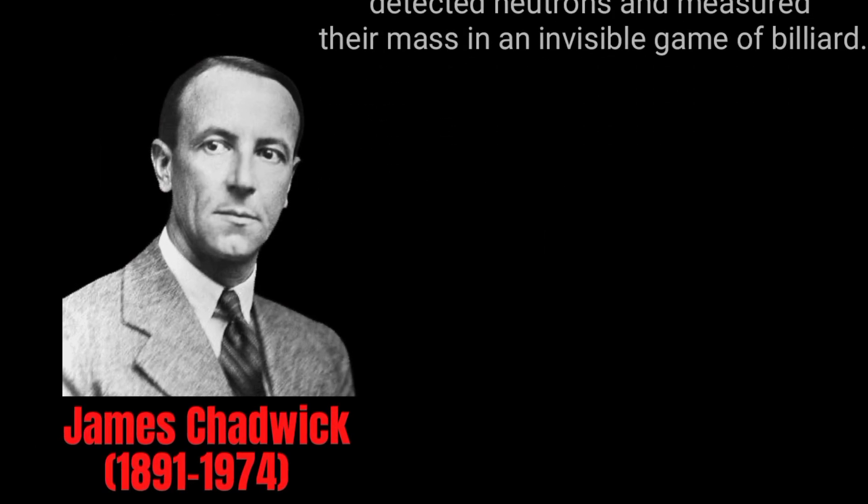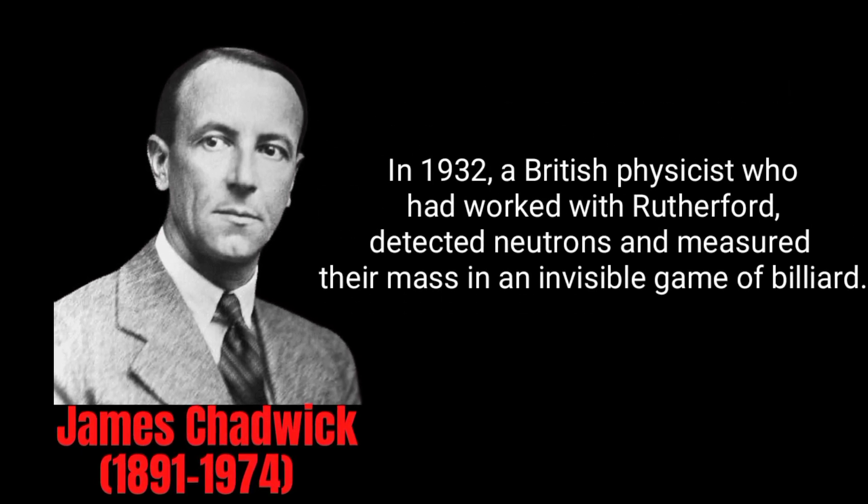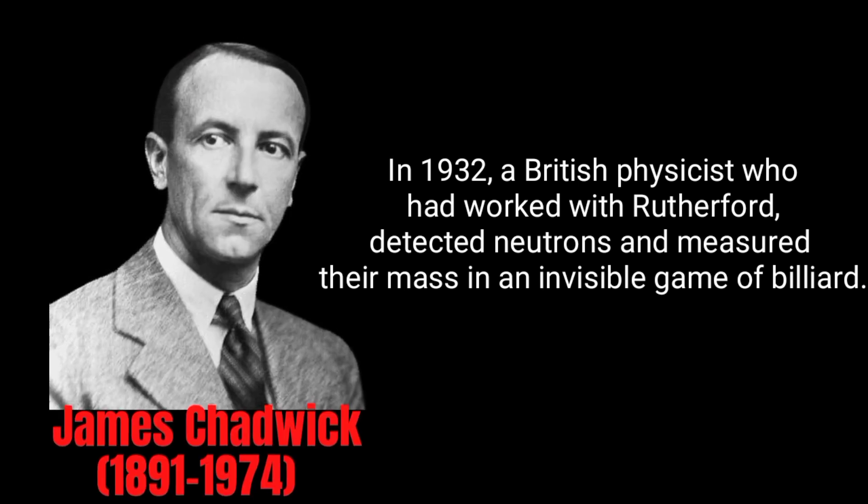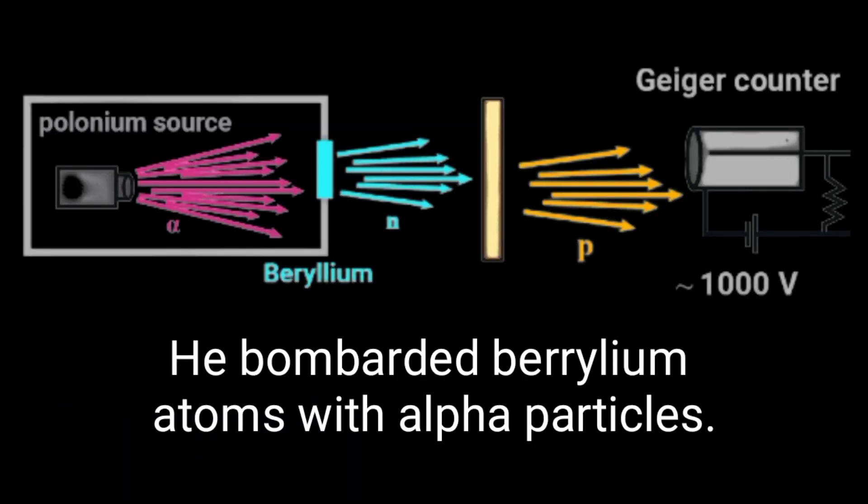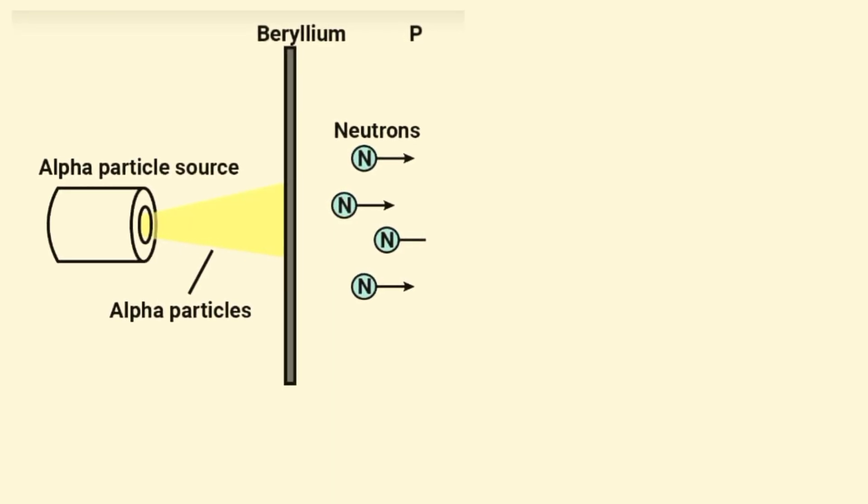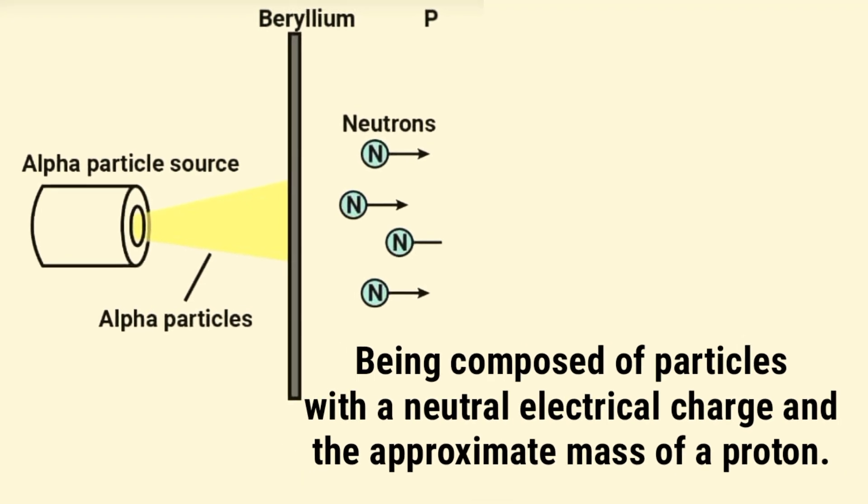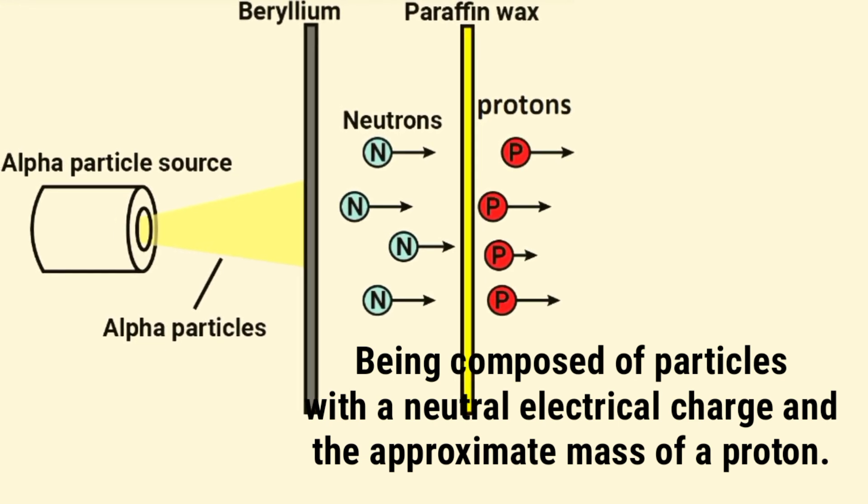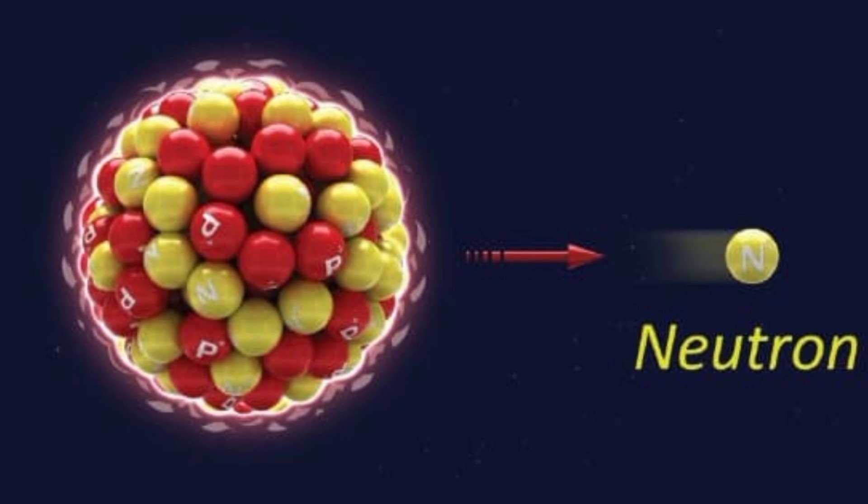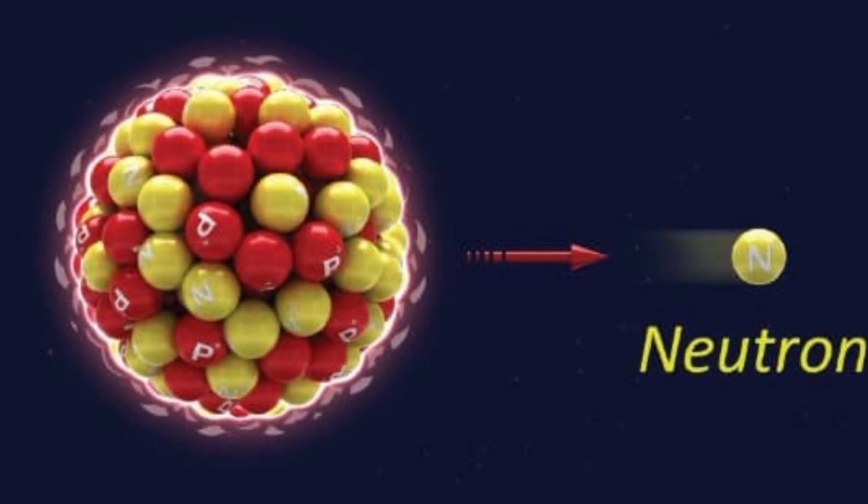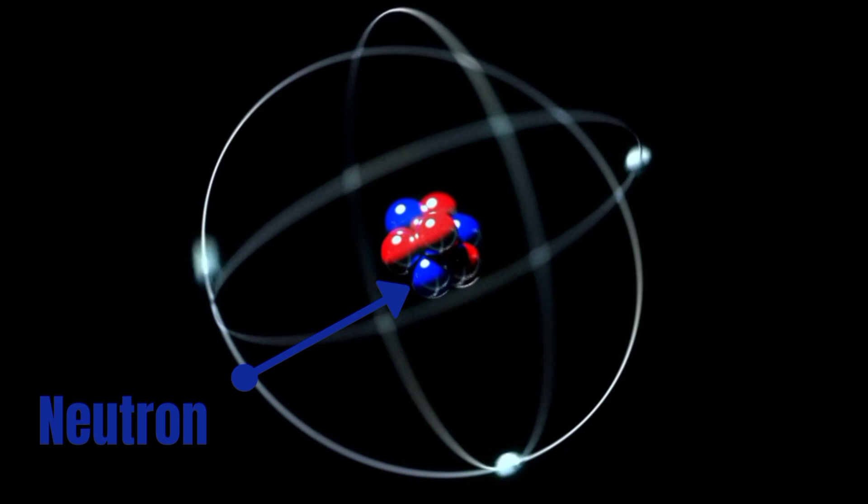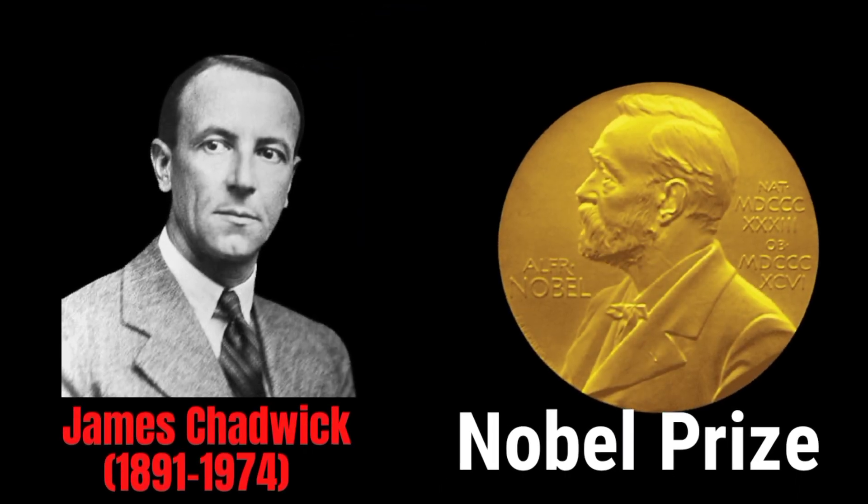In 1932, James Chadwick, a British physicist who had worked with Rutherford, detected neutrons and measured their mass in an invisible game of billiards. He bombarded beryllium atoms with alpha particles. An unknown radiation was produced. Chadwick interpreted this radiation as being composed of particles with a neutral electrical charge and the approximate mass of a proton. This particle became known as the neutron. With the discovery of the neutron, an adequate model of the atom became available to chemists. He was given the Nobel Prize for his discovery.